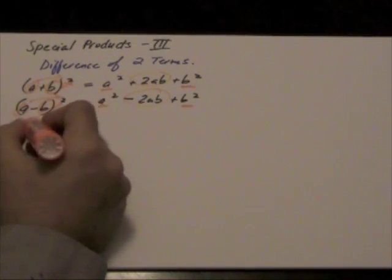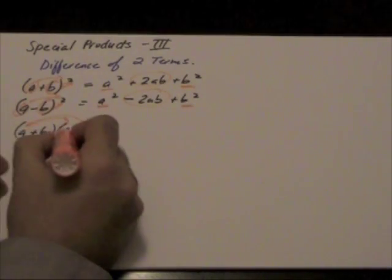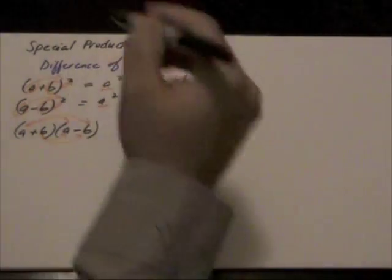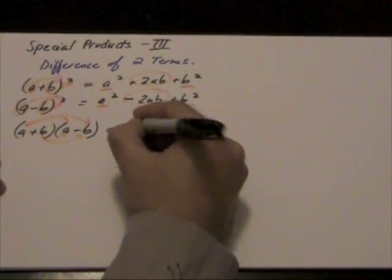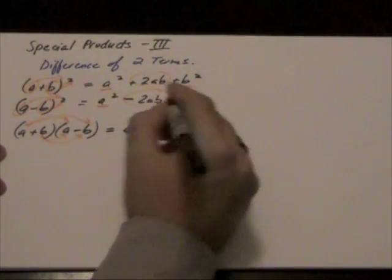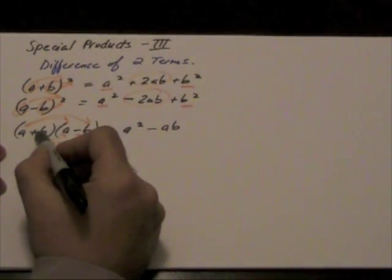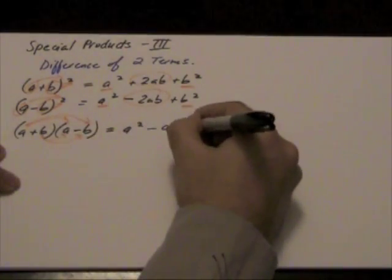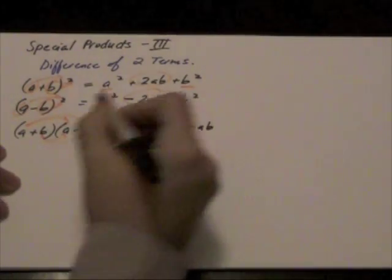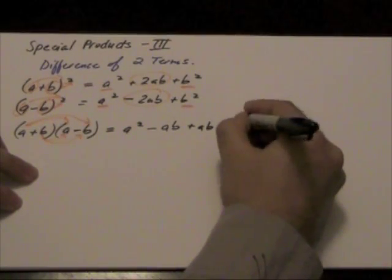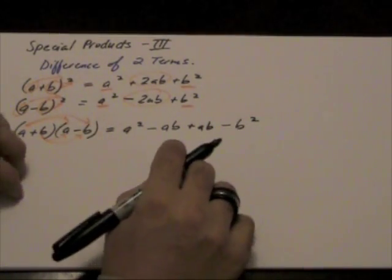So, first, then with outer, inner, then with last. And we get the following: a times a, a squared, a times negative b minus ab, positive b times a, positive ab, b times negative b, negative, or negative b squared.